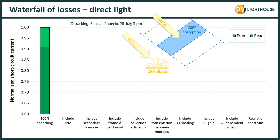We'll plot those losses in terms of the short circuit current, which is proportional to the intensity of light absorbed by the module. In the first column of the graph we give the results for a perfect module, one that converts all incident photons into collected electrons, normalised so that it adds up to one. This is a specific example — if you happen to be in Phoenix today at roughly the time of this presentation, looking out the window at a large tracking bifacial system with the same dimensions as the CFE test facility, with white rocks on the ground and sunny conditions, then the numbers we present will be representative of a central module in that system.